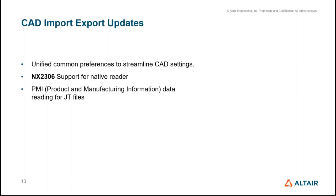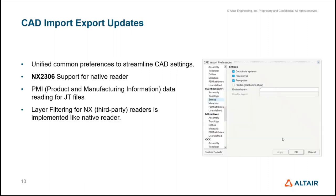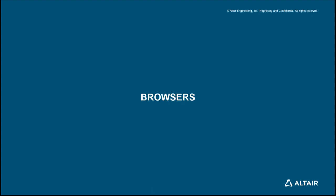There was a customer request to read product and manufacturing information from JT files. This is now supported in 2023.1 — when you import JT files containing PMI data, it will be shown as metadata. Layer filtering for NX third-party readers has also been implemented, just as it exists for native readers — extending that same functionality to CQ-based readers as well. With that, I've concluded my part and will hand it over to Sophia.